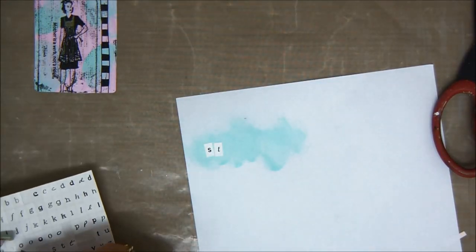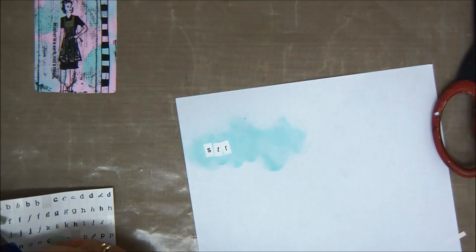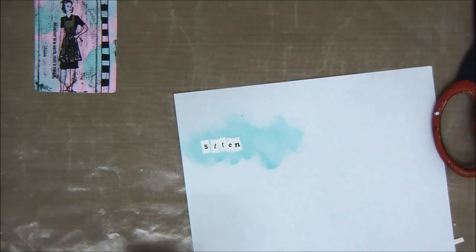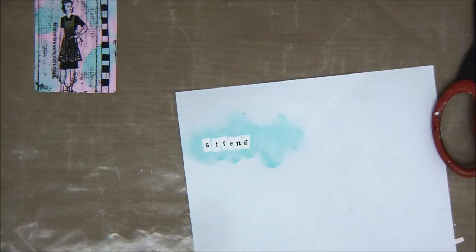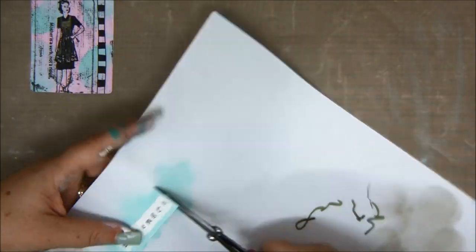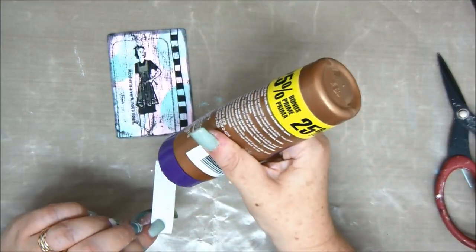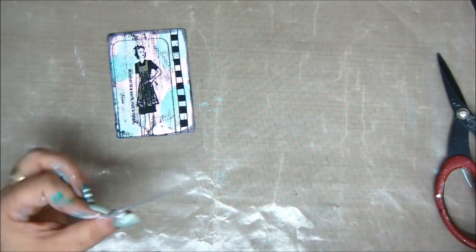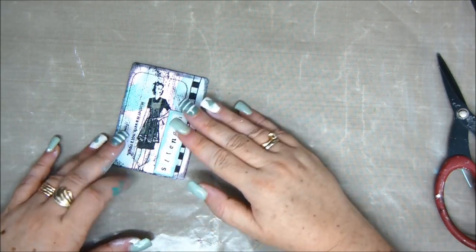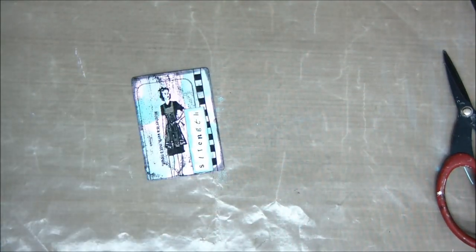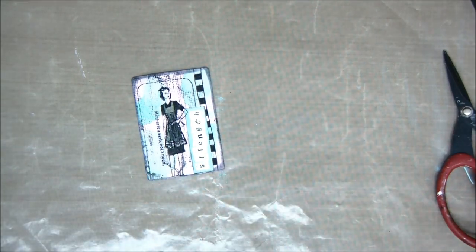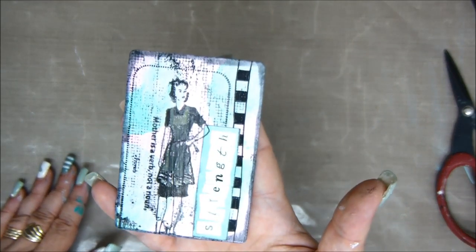This series of altering 52 playing cards is all about different mixed media techniques that I'm using on each card and a different word that I'm adding to each card. I've created a list of 52 words that mean something to me, inspire me, empower me. One of them is strength. I'm altering 52 cards with 52 different words and 52 different mixed media techniques. This is a really cool series that you don't want to miss. We started with four last time, this is another four. The entire series is on the VIP Room Creative Club. This is the first card.